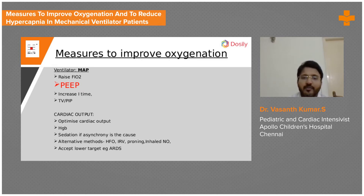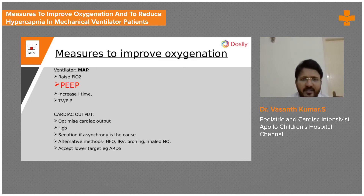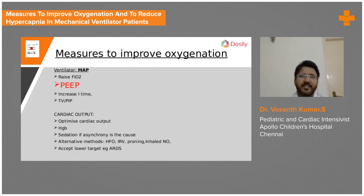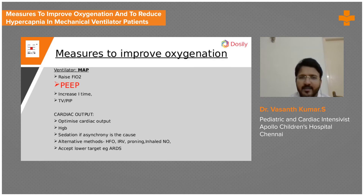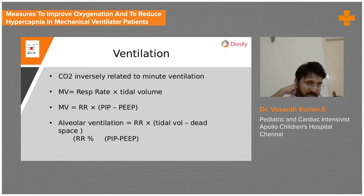If saturations do not improve with all these measures, consider alternative methods. One is prone positioning — when supine, the basal dependent areas of the lungs collapse; turning the patient prone recruits more alveoli. Other options include high-frequency ventilators and nitric oxide. Despite all these measures, in severe ARDS you can sometimes accept a lower saturation — provided tissue perfusion is maintained — which is called permissive hypoxia.